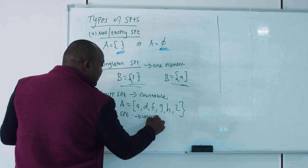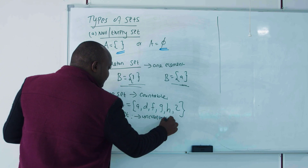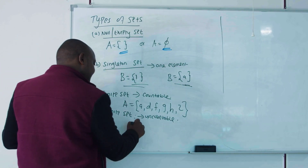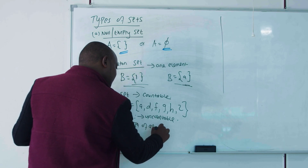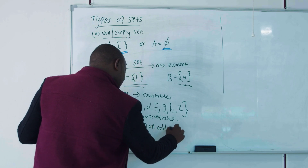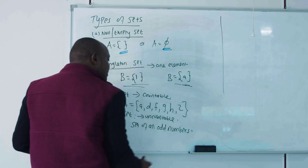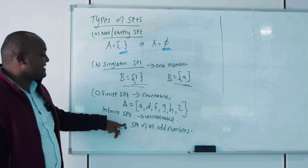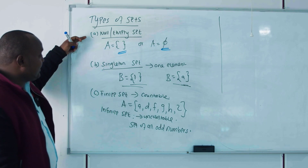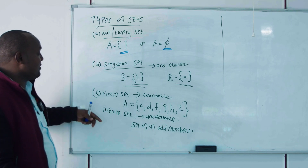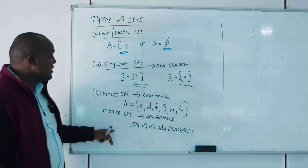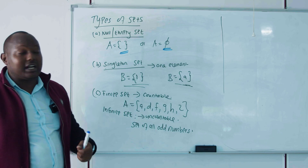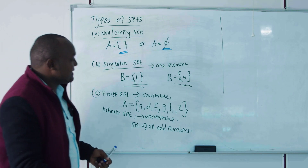At the same time we may have an infinite set. An infinite set is uncountable — for example, the set of all odd numbers. You don't know how many odd numbers there are, so it is uncountable and therefore an infinite set. So we have looked at the empty set, singleton set, finite set, and infinite set.